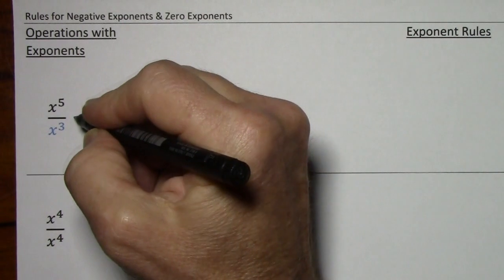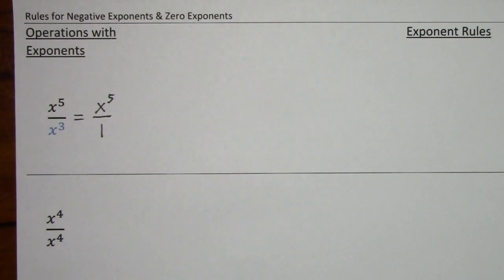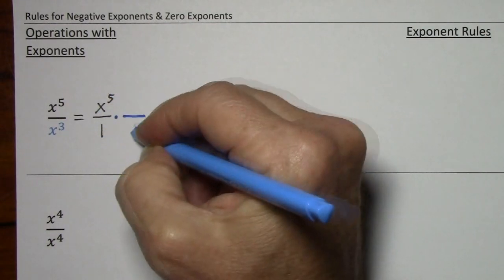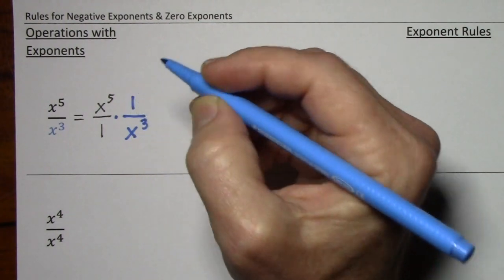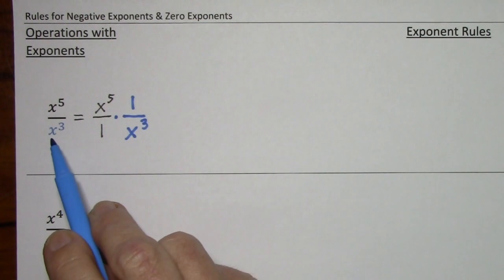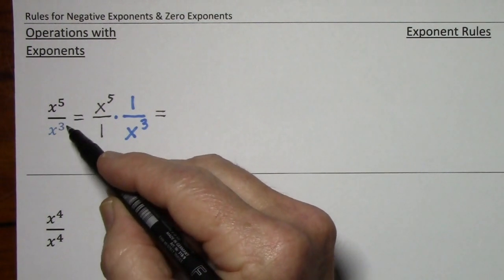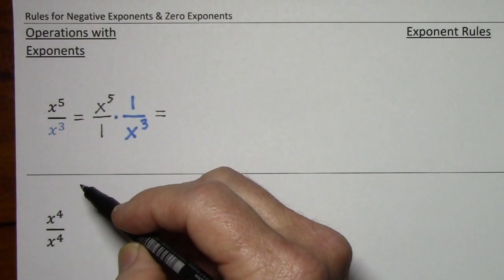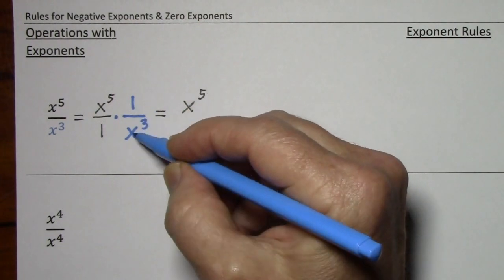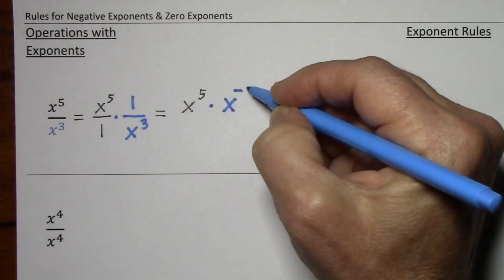Well, x to the fifth can be written as x to the fifth over one, and this x to the third in the denominator can simply be written as x to the third under one. So from here to here I've preserved the meaning. Now based on our rule for dividing like bases, we would cross out x to the third so long as we subtract three from five, so the x to the fifth is preserved. And instead of writing one over x to the third, I'm going to say times x to the negative three.